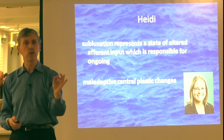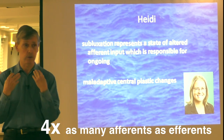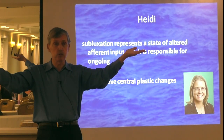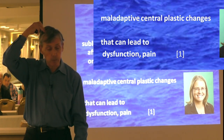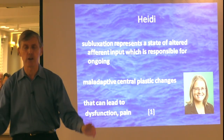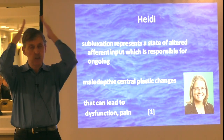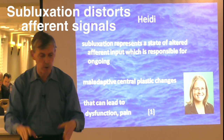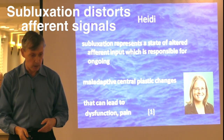Brain patterns. We have at least three times the number of afferent neurons as efferent. We have many more receptors from the environment — that's evolution, that's survival. These maladaptive central plastic changes can lead to dysfunction because we're getting distorted information from the environment, including the external parts of our body. Incorrect information goes into our brain, which has to send out commands. It's giving the wrong orders because it's getting the wrong information coming in. That's note number one from Heidi.